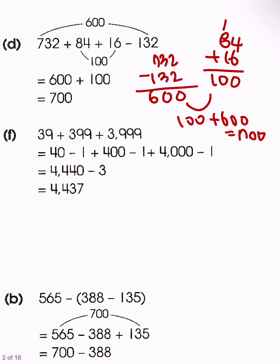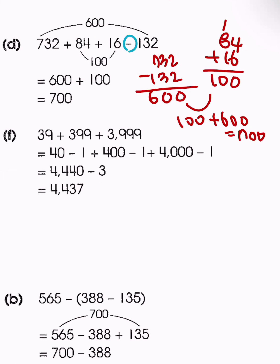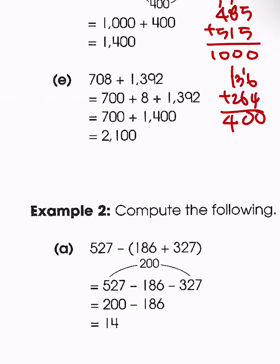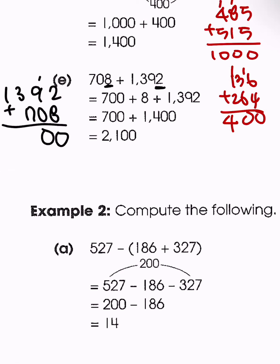It's important to always keep the sign as it is when you're rearranging. For problem E, both numbers end in 8 and 2. So when we add those together, we would get 2,100.